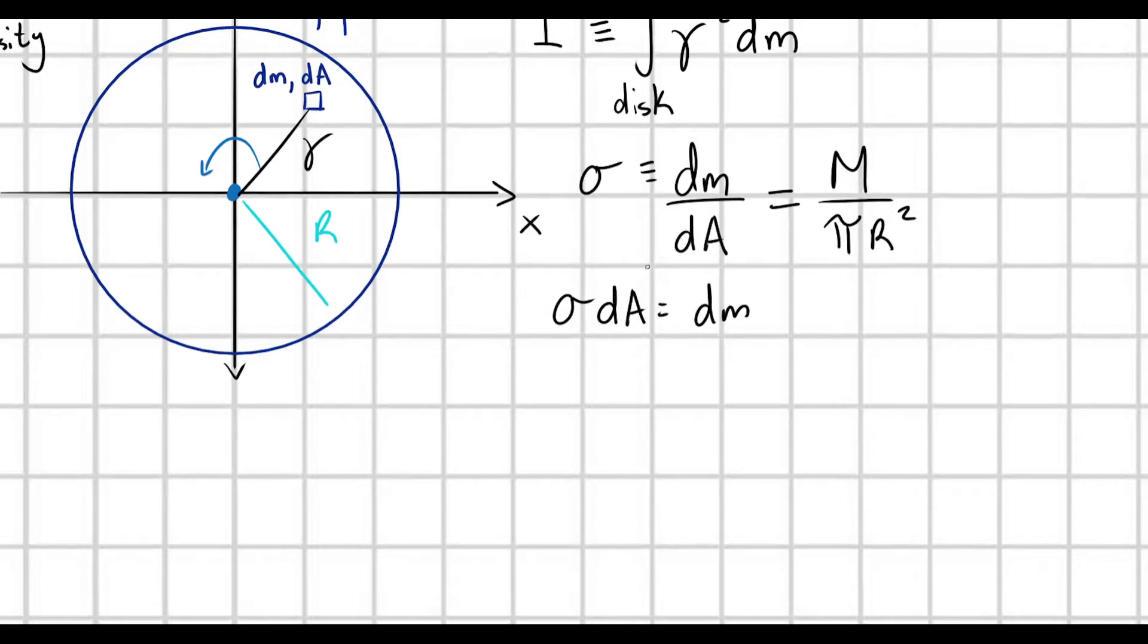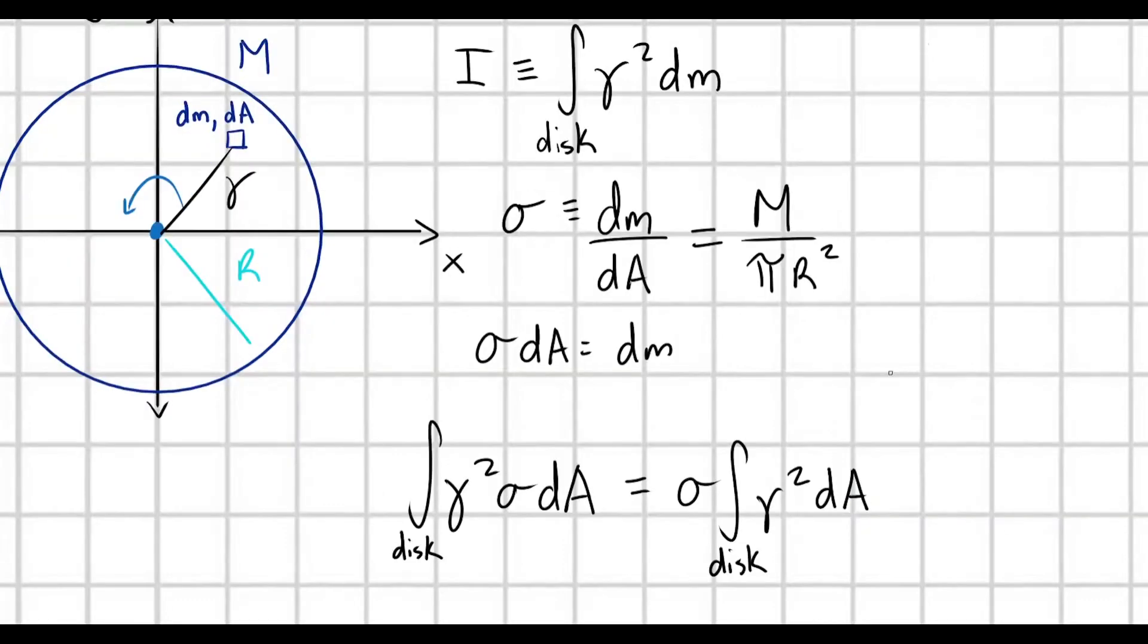Then, I can substitute in for dm. This is going to be the integral of gamma squared times sigma. This is times sigma dA. And this is still over my disk. Okay, cool. And sigma, again, this is just a constant, so I can pull it out of the integral. So, here, I'll just rewrite this out.